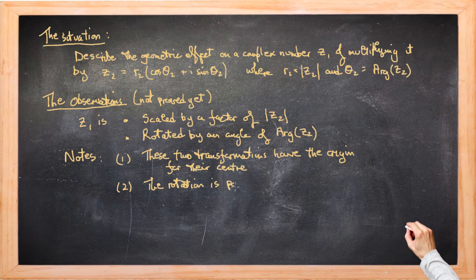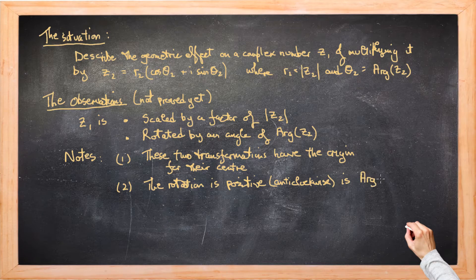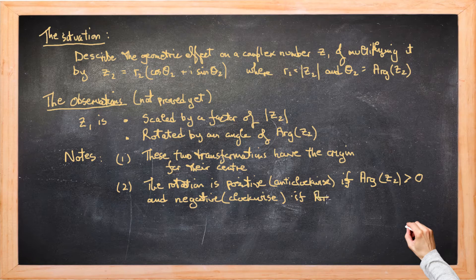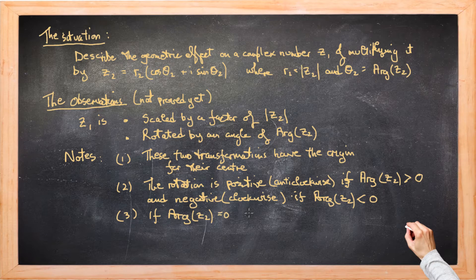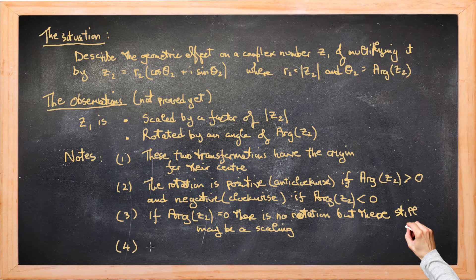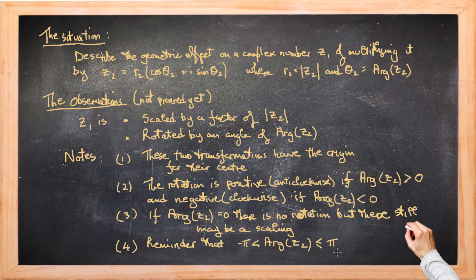And secondly, the rotation is positive if the principal value of the argument is greater than 0. That's in an anti-clockwise direction. The arg Z2 is positive. And if it's negative then the rotation will be in a negative. That's a clockwise rotation. And we can have an argument of 0. Remember we multiply by 2 and 3 and there is a scaling but no rotation. And finally just remember that the principal value of the argument has to lie between negative pi and pi. We include pi but not negative pi.